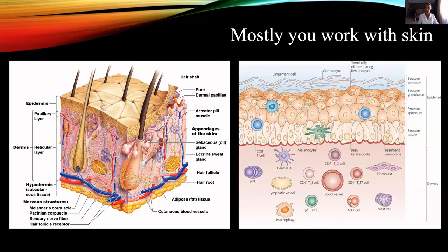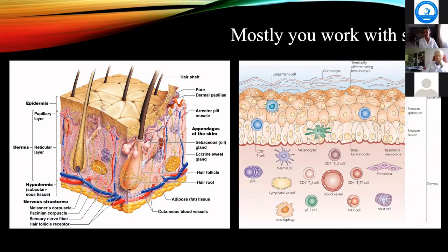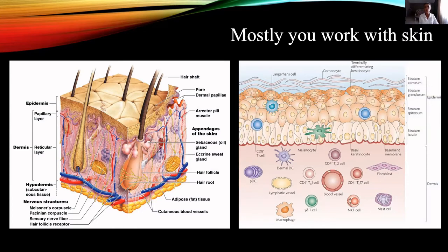Skin never forgets anything you do with it. Skin never forgets all your manipulations. It is the largest organ in the body, and at the same time, I think the most intelligent organ. From school and university, we remember that the organ controlling all functions is the brain, and that other organs do what the brain tells them — the brain sends impulses and other organs function.